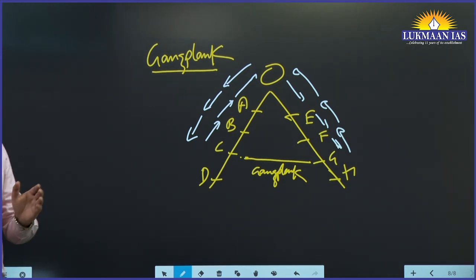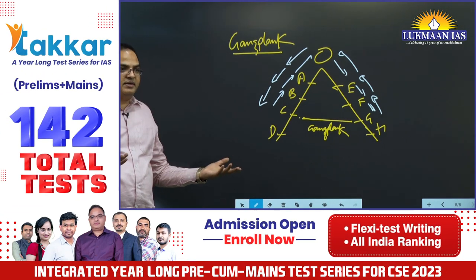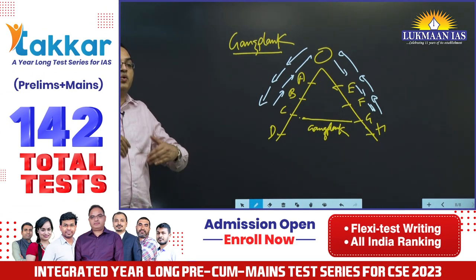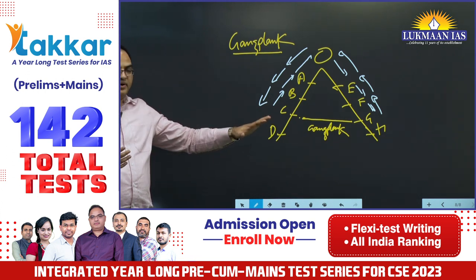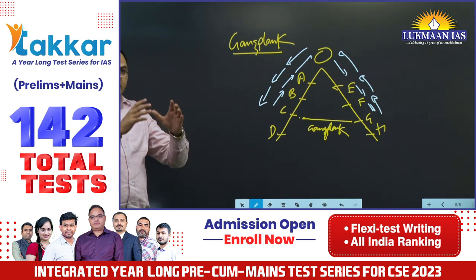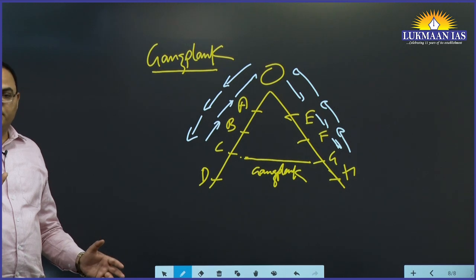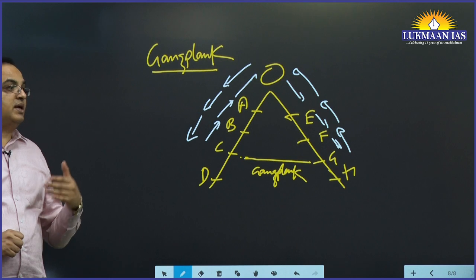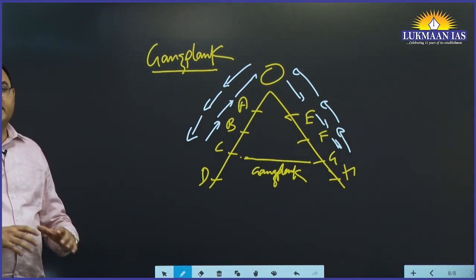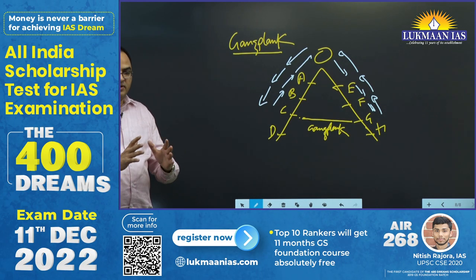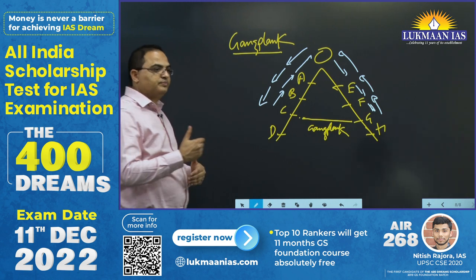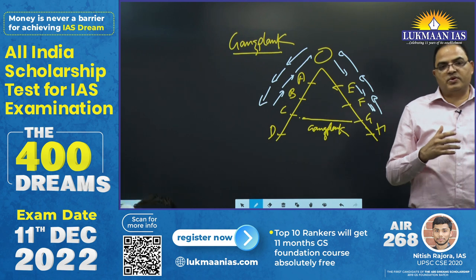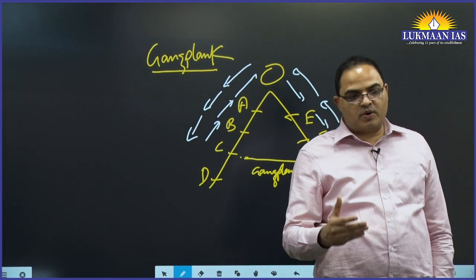But Fayol talked about how the organization itself can be divided — six functions. Then what should be the role of the manager — five functions. How organization can be organized and structured — fourteen principles. He also talks about communication and administrative leadership. So you can see he has a more broad consideration about organization, organizational problems, and how organization can be managed and run.